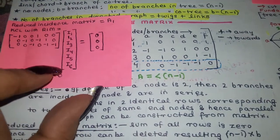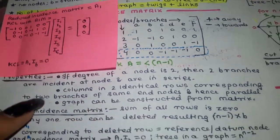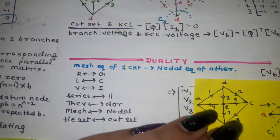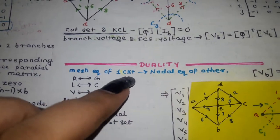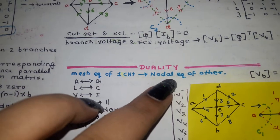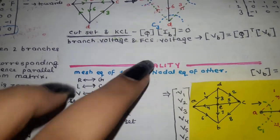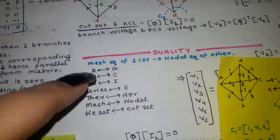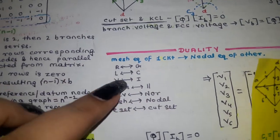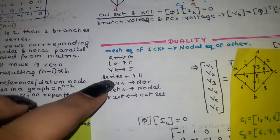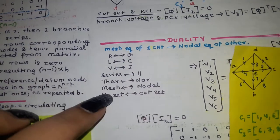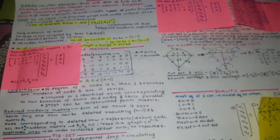Now let's move on to duality. If the mesh equations of one circuit are equivalent to the nodal equations of another circuit, these two circuits are called dual to one another. Certain properties are dual as well: resistance and conductance G, inductance L and capacitance C, voltage and current, series and parallel, Thevenin and Norton, mesh and nodal, and tie-set and cut-set. This concludes Part 2, and we will now move to Part 3.